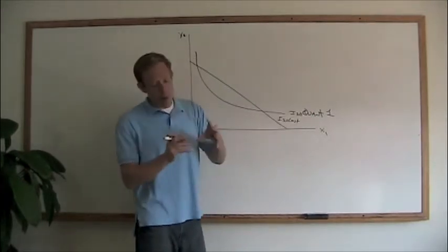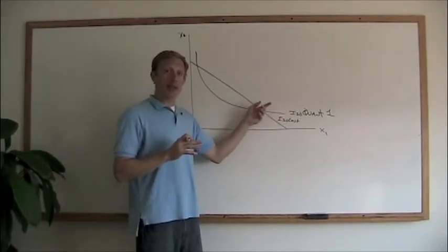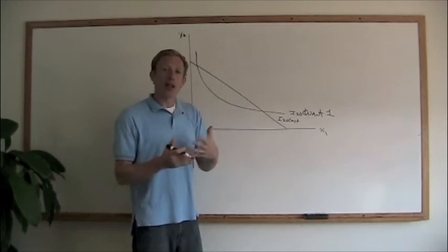And if we put a little bit more labor and a little less capital in, we'd get the same quantity. That's what the isoquant line is telling us.